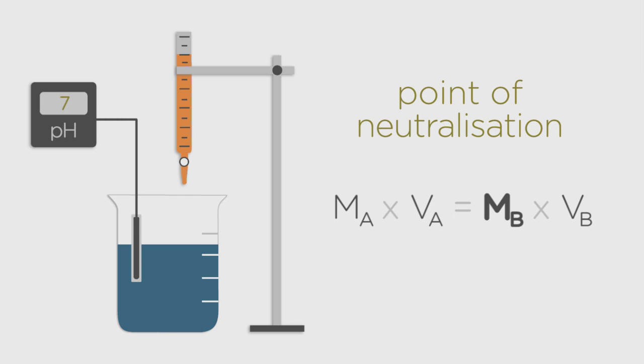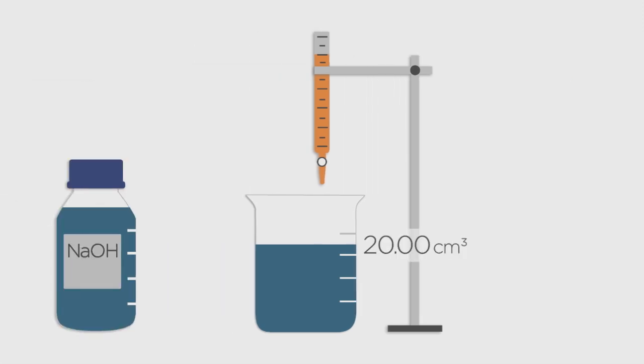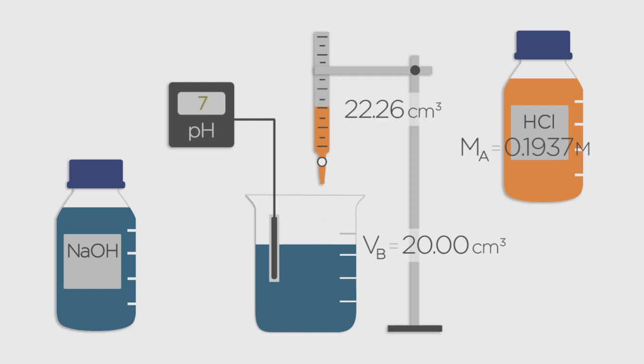So here's your challenge: You've measured out 20.00 cubic centimeters of our mystery sodium hydroxide into a beaker—that's VB. Our hydrochloric acid was 0.1937 molar—that's MA. And to make our solution completely neutral required a titration of 22.26 cubic centimeters of the acid—that's VA. Can you work out MB? Pause the video and have a go.